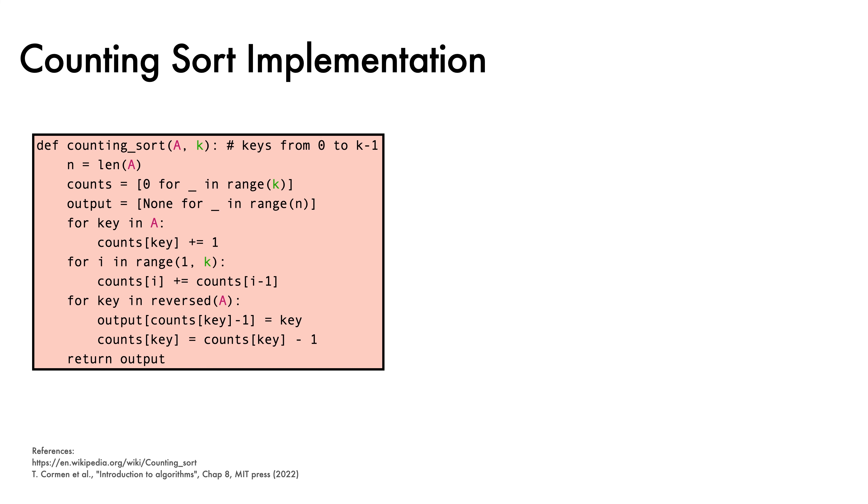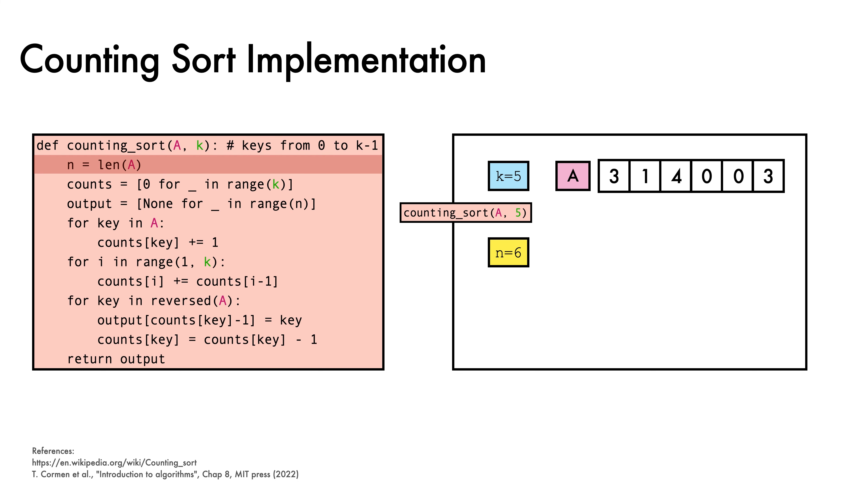Let's see our function in action on this array, where our assumption will be that all keys are less than 5. After calling the function, we first compute the length of the array, which here yields n equals 6. Then we initialize our counts array with zeros, one for each possible key.